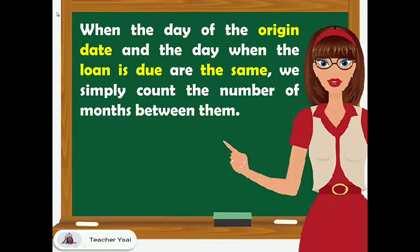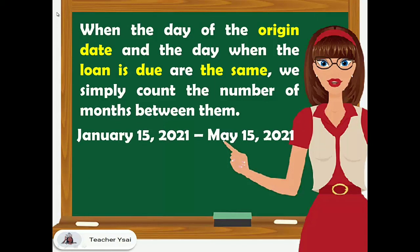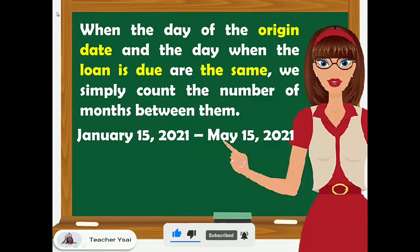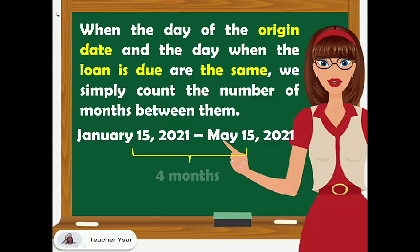When the day of the origin date and the day when the loan is due are the same, we simply count the number of months between them. For example, January 15, 2021 to May 15, 2021 — the origin date and the due date have the same day, so we just count the number of months between January 15 and May 15, which gives us four months.